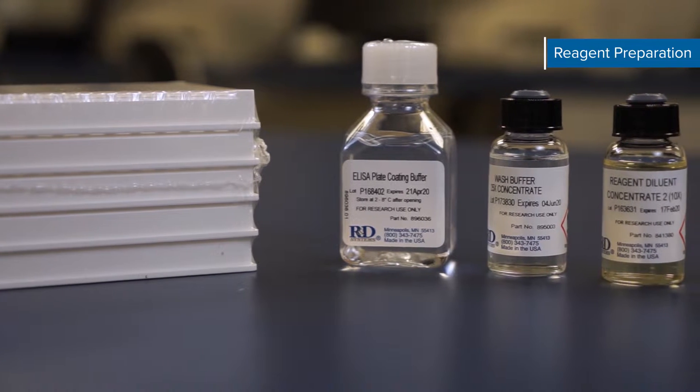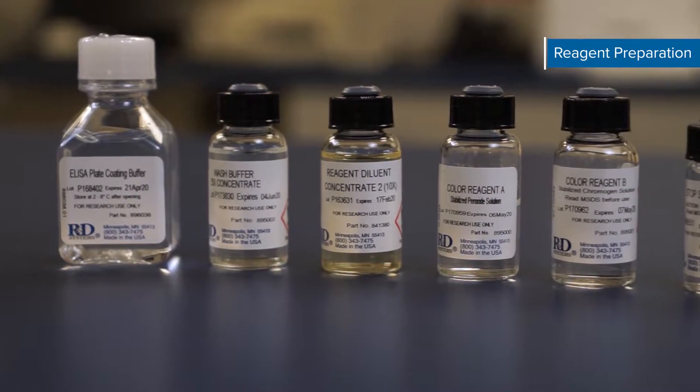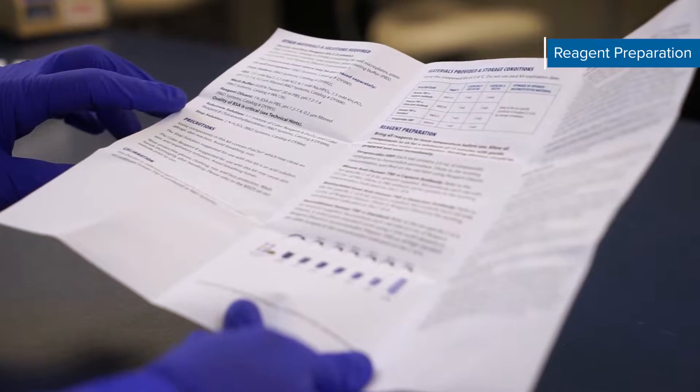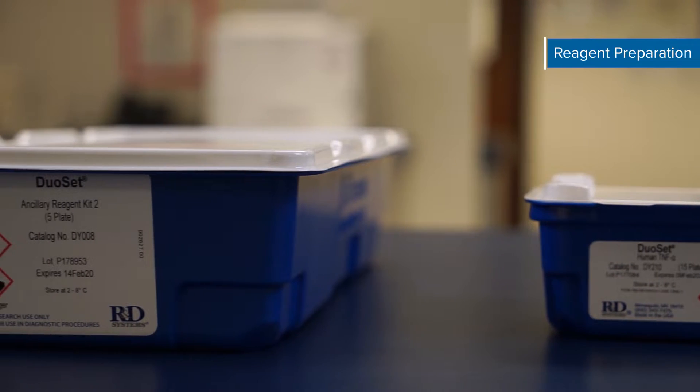Begin by preparing reagents. First fully equilibrate all reagents, buffers, and lyophilized vials to room temperature. Buffers and other materials required are listed on the assay insert. Recommended reagents can be found in the assay insert and on the supplemental products tab of the products web page.